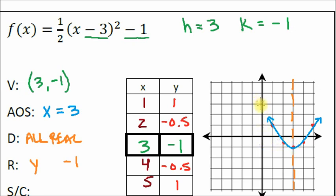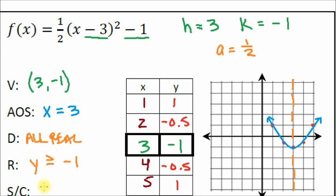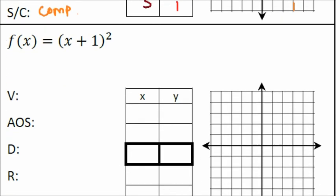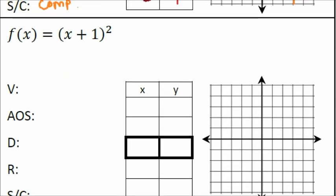The range is y greater than or equal to negative one. For stretch or compression: our a value is one half. When the a value is less than one we are squishing the graph down, so this is a compression.